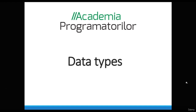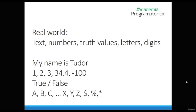Let's now talk about Java data types. In the real world, we use information. This information can be text, numbers, truth values, or characters. When I say "my name is Tudor", I just said a text. When I say 1, 2, 3, 34, I'm saying some numbers. True or false are the only possible values for truth, and A, B, C, X, Y, Z may be letters — characters. In programming, our text will be written as a String and must be enclosed in double quotes.